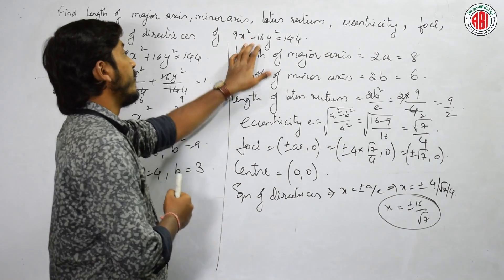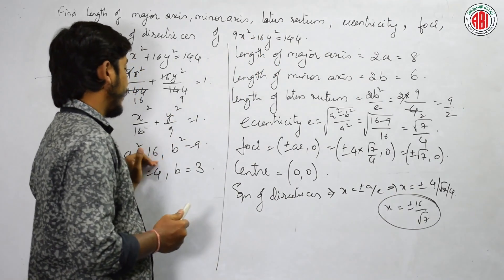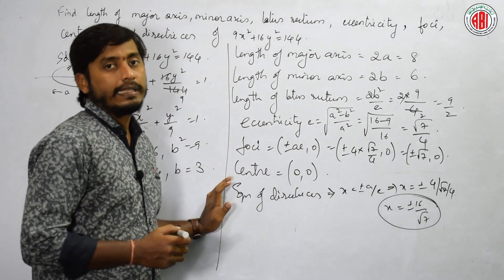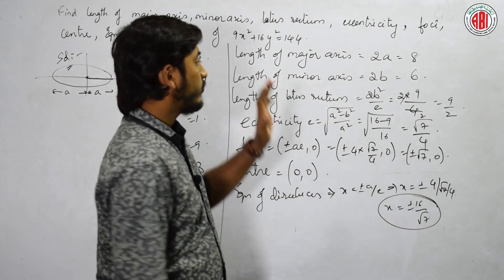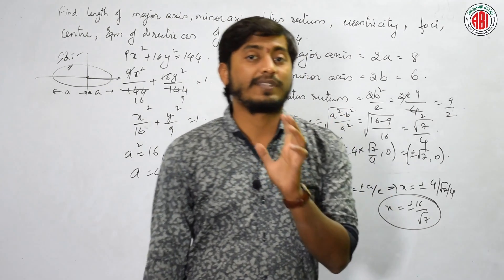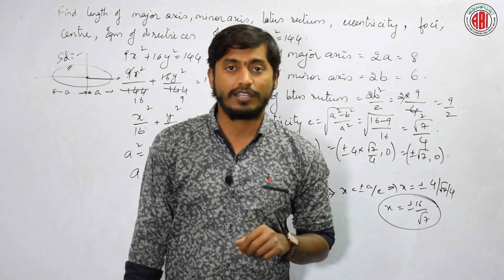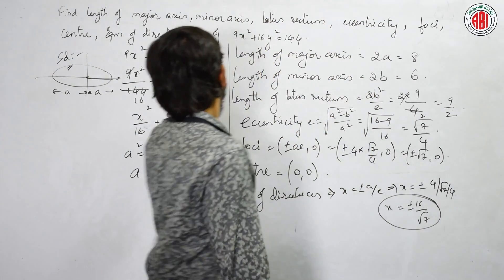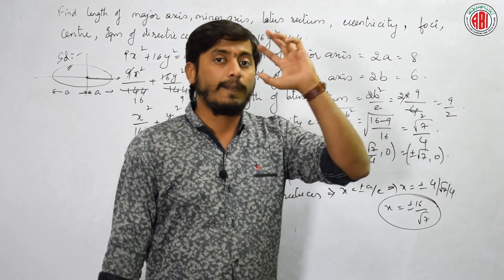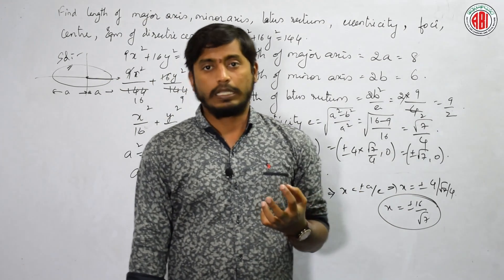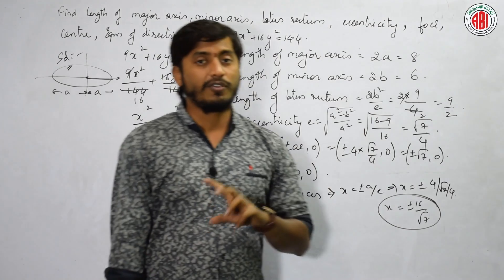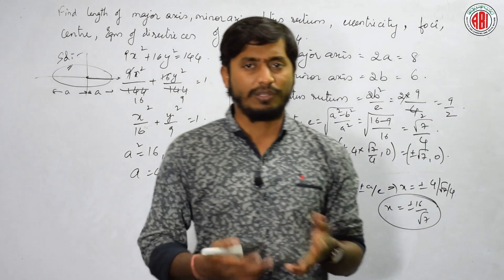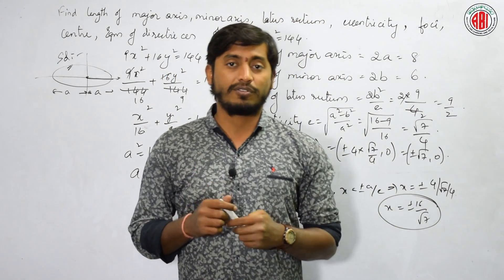The main thing to remember is: first write the given equation into the standard form, then identify the parameters a and b, and we will start finding all the required values. All the ellipses we discussed so far have their center at the origin. What if the center of the ellipse is not the origin — if it is shifted to the right, left, or into a different quadrant? Even in parabola, we did y² = 4x and then also y−k whole squared forms.